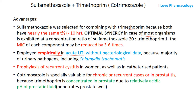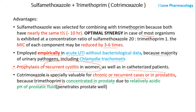Cotrimoxazole is also employed empirically in the treatment of acute urinary tract infections without bacteriological data, because majority of the urinary pathogens include Chlamydia trachomatis. It is also useful in the prophylaxis of recurrent cystitis in women and in catheterized patients. Cotrimoxazole has special value in the treatment of chronic and recurrent cases of prostatitis, because trimethoprim gets concentrated in the prostate due to the relatively acidic pH of prostatic fluid, allowing it to penetrate the prostate wall.